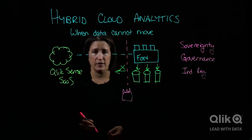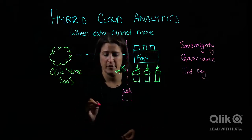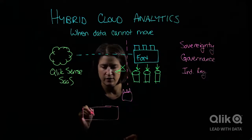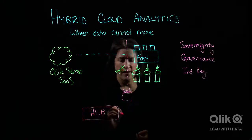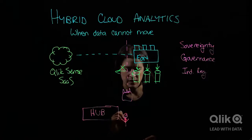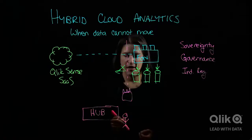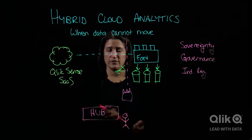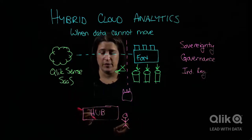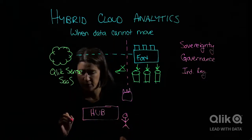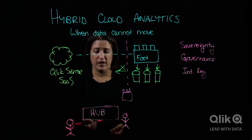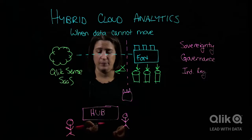From a user experience and an administrator experience, everyone can go to one place, which is the Qlik Sense SaaS hub. That's where your administrators can manage from one single management console all the workloads that are in forts and all the workloads that are in Qlik Cloud as well. From an end user experience, they can also go to the hub — they have one login, one set of credentials, and in the hub they can access all of their content.